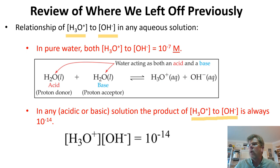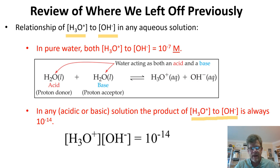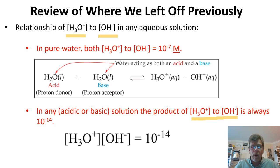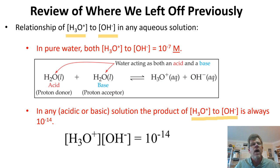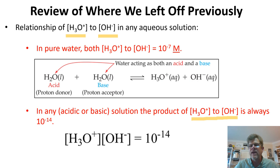If we know the hydronium ion concentration or the hydroxide ion concentration, we can very easily calculate the other based upon this simple equation. We're now going to look at a better way of expressing the concentration of hydronium or hydroxide ion in solution. Up to this point, we've been looking at vanishingly small numbers as concentrations, and these can be converted into a logarithmic scale, which is much more pleasing to express. This is known as the pH scale.